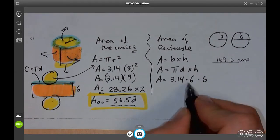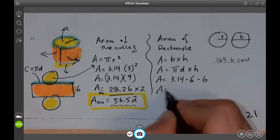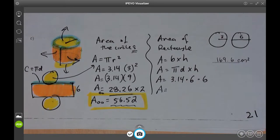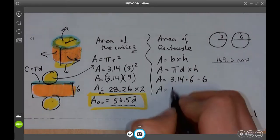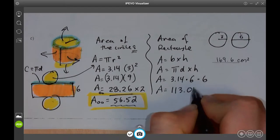So 36 times 3.14. 36 times 3.14. And we get 113.04.